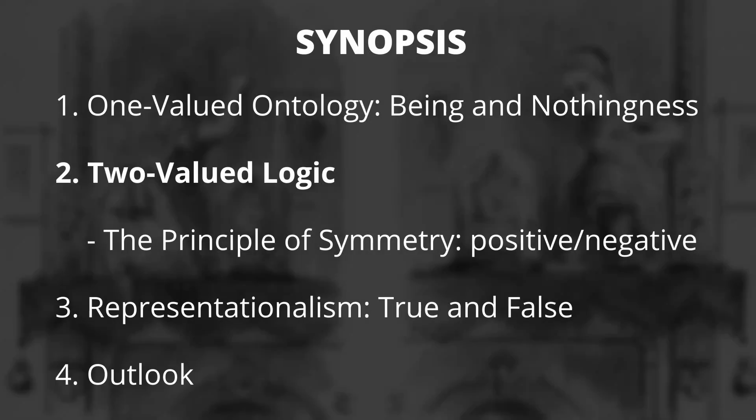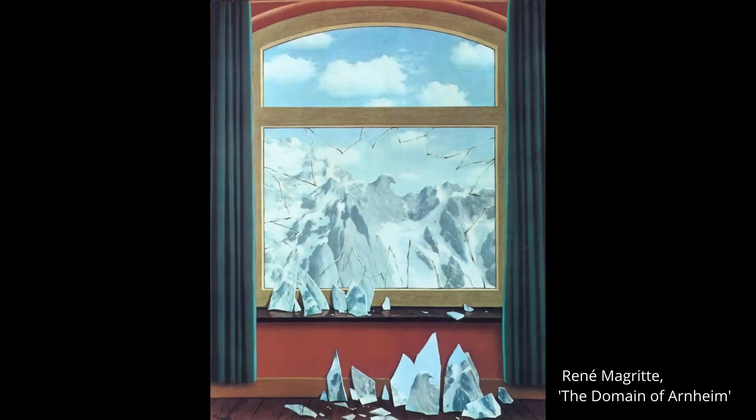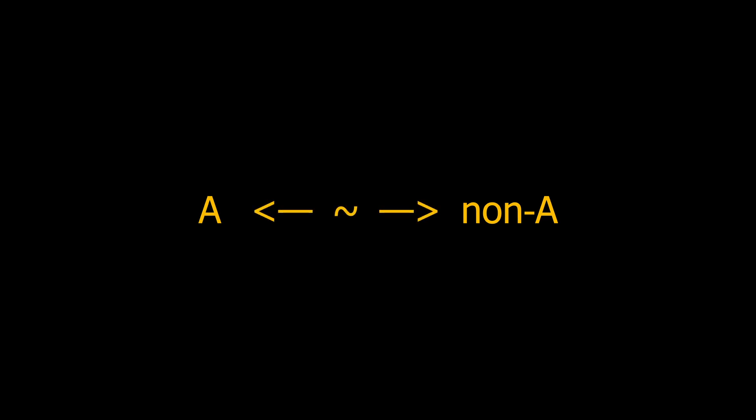This is where a second value comes into play that will allow us to clearly separate two opposites. One-valued ontology is accompanied by a two-valued logic. There are only two kinds of thoughts: true thoughts and false thoughts. And there are only two ways of relating to the world: affirmatively and negatively. Formal logic provides two values — let's call them A and non-A — and an operation to get from one side to the other and back again: negation. By negating A, we get non-A and vice versa.